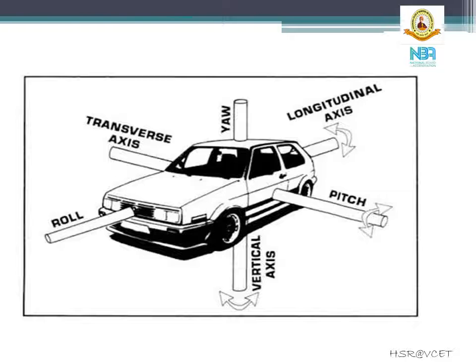This figure on the slide shows you the three different axes of a vehicle. The first one is called the vertical axis, the second is the longitudinal axis, and the third is the transverse axis. If the vehicle rotates on the vertical axis, that motion is called yaw. If the vehicle rotates on the longitudinal axis, that is called roll. And if the vehicle rotates on the transverse axis, such motion is called pitch.